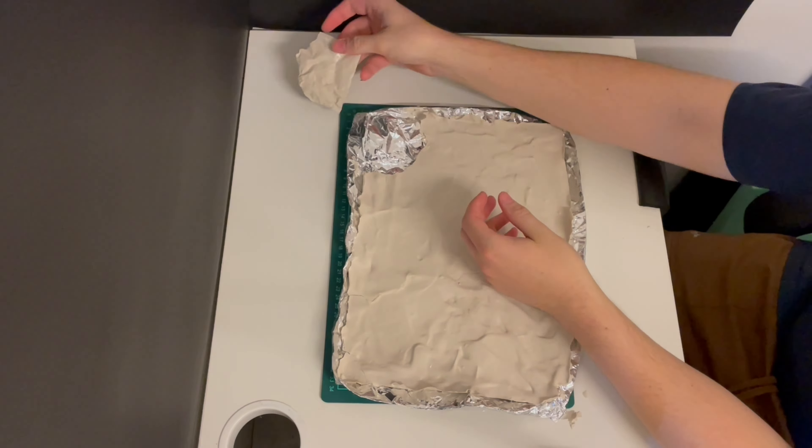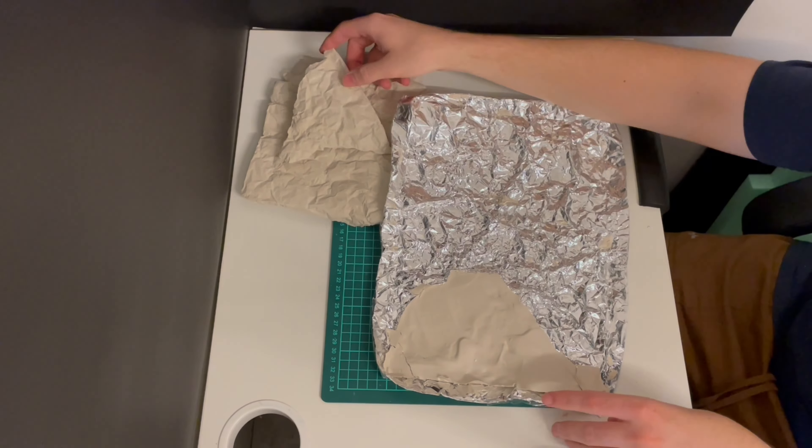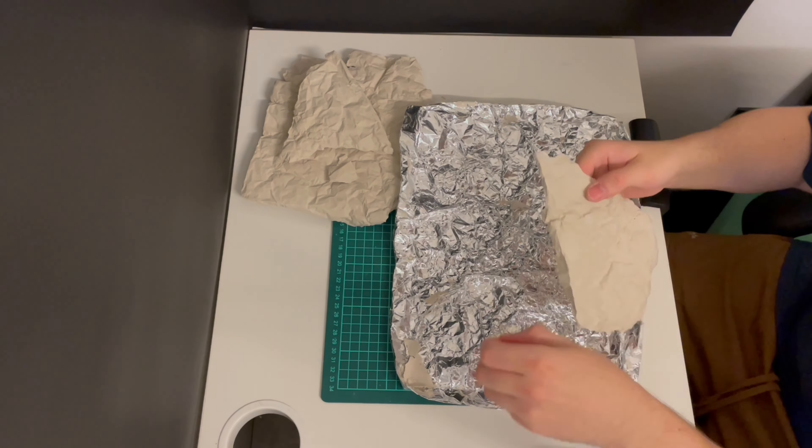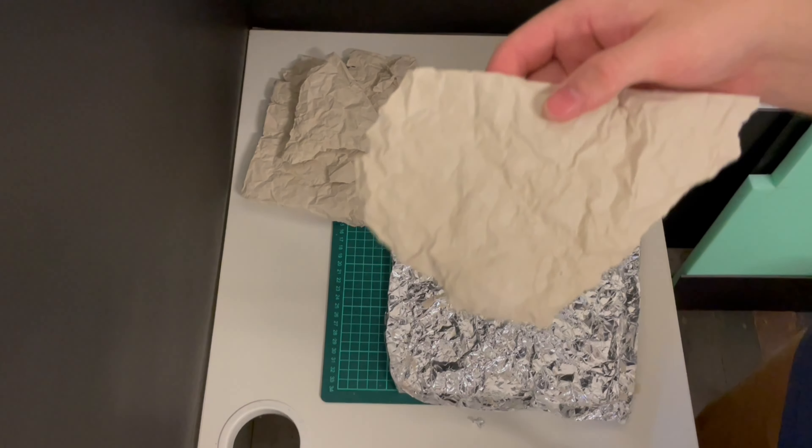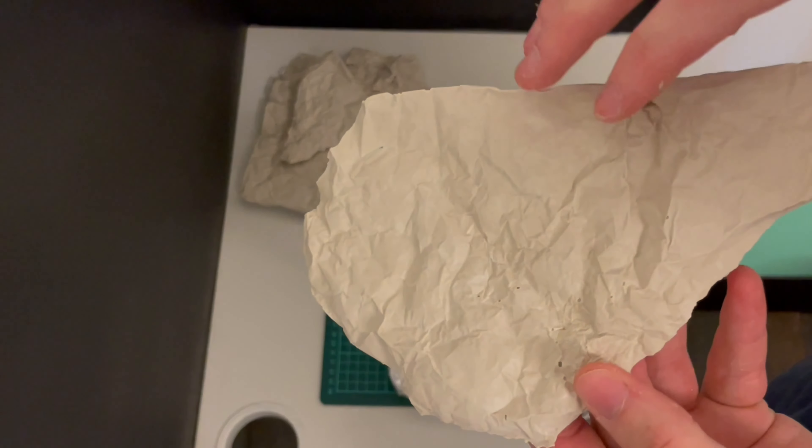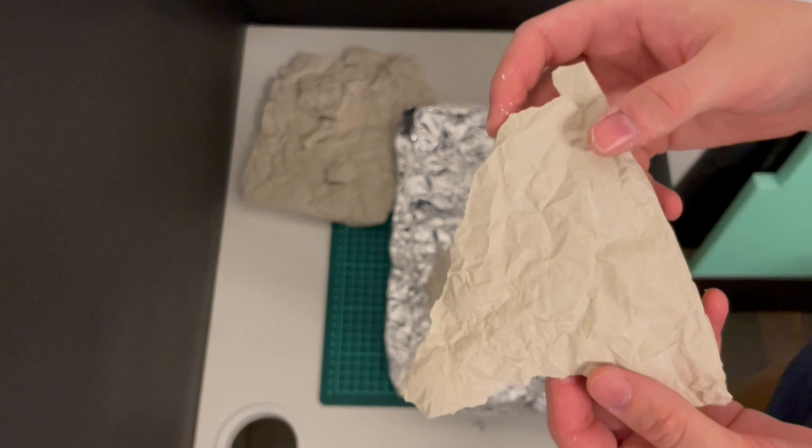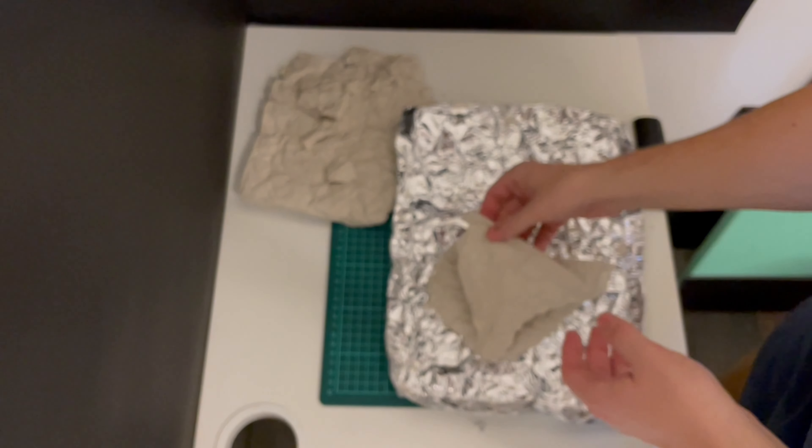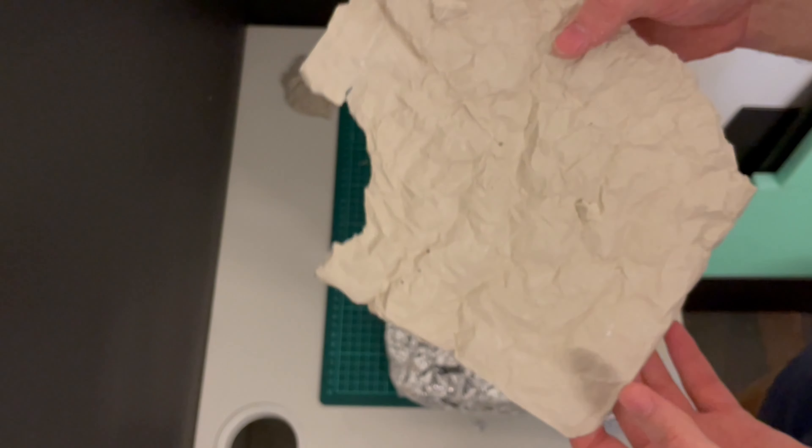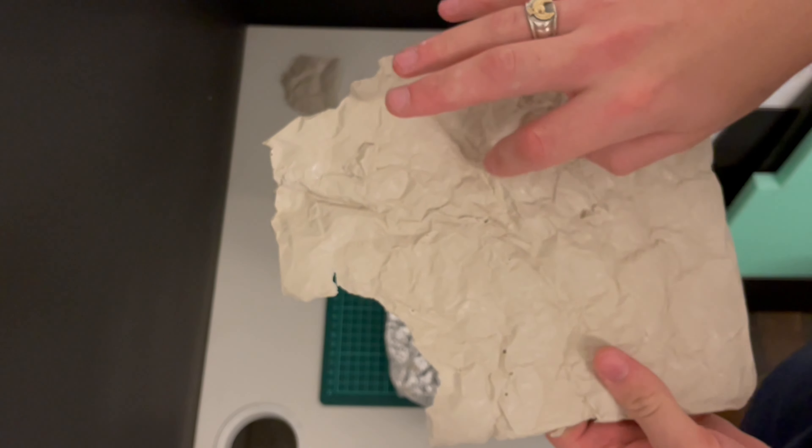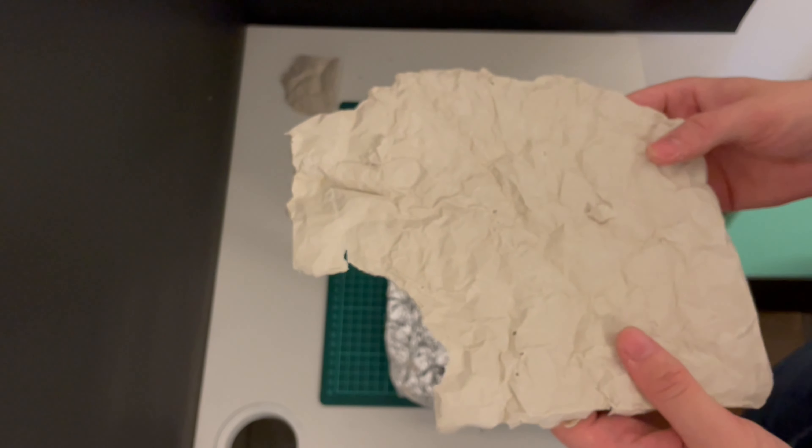Once the plaster's set, it's time to carefully peel away the mold. But you don't have to be too careful and it's fine if it breaks because I'll be breaking pieces off it anyway. As you can see, the mold makes a really nice rock texture which will paint up really well, and it has some nice deep ridges for some lava veins which I'll paint on later.